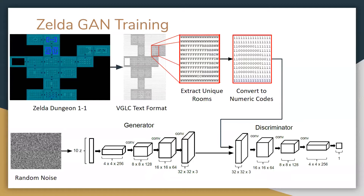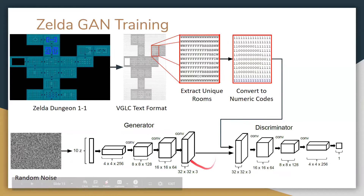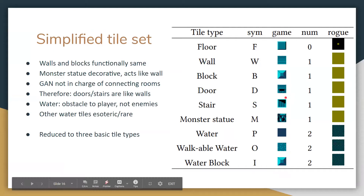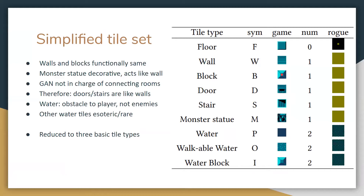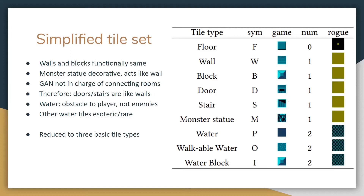Given this simulator, we used a GAN but applied it differently: training on individual rooms. We go through a given dungeon in VGLC format, each room is its own training sample, we convert to numeric codes, then train the generator and discriminator the same way using the same Python code — so it's very generalizable. We simplified the tile sets: wall versus block is basically the same thing, reduced to just floor, solid wall, and water. Water is a semi-passable obstacle — enemies can pass it but the agent can't unless it has a special item. Doorways and stairs were made into walls since the GAN wasn't responsible for connecting rooms.